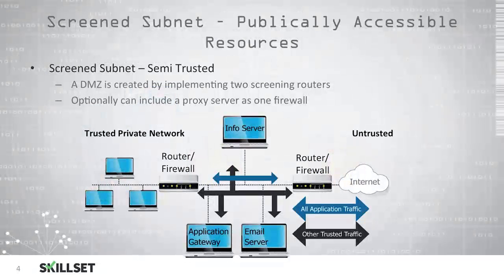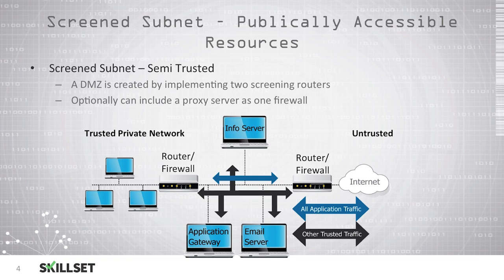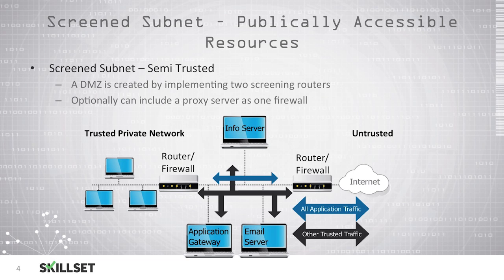Setting up a DMZ allows you to create a screened subnet to provide resources to the public. A screened subnet is a semi-trusted network between your trusted private network and the untrusted internet. You create a DMZ by implementing two screening routers on either side of the DMZ, and you can also include a proxy server as one of the firewalls.